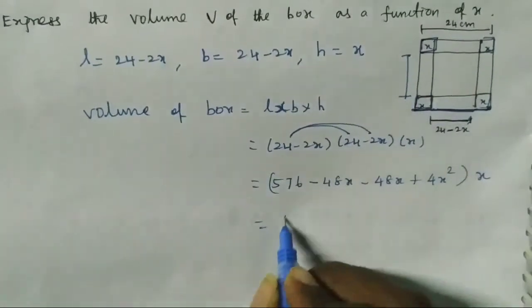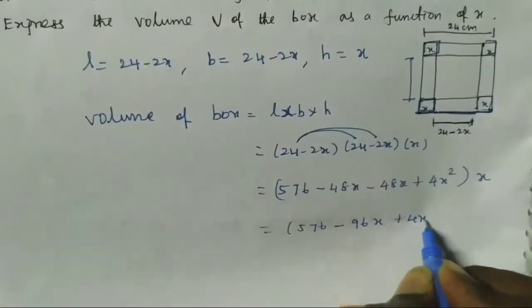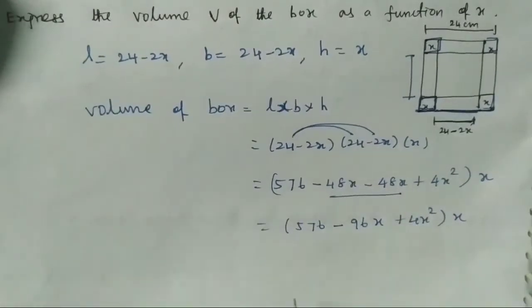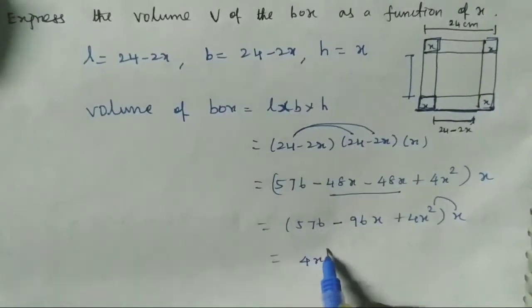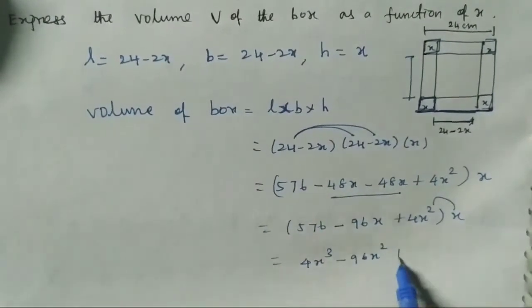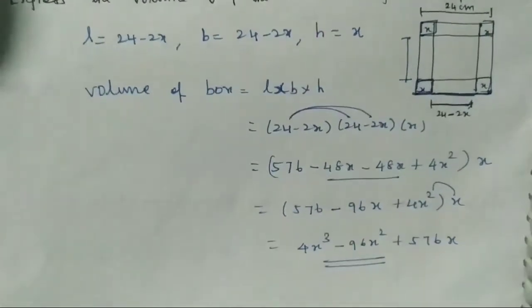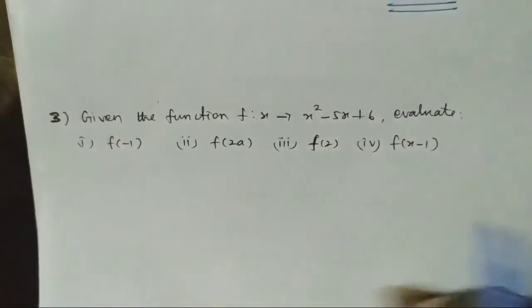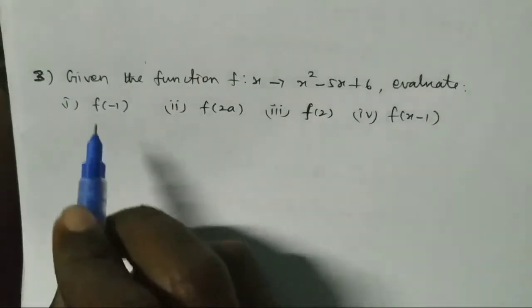Now multiply by x. We get 576x minus 96x plus 4x square times x, which gives 4x cube minus 96x square plus 576x. This is the volume expressed in terms of x.